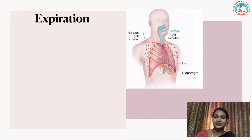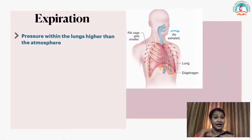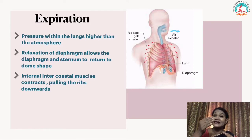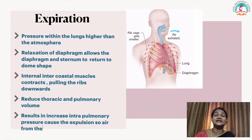The next phase is expiration — breathing out. The pressure within the lungs is higher than the atmosphere. The relaxation of the diaphragm allows it to return to its dome shape. The internal intercostal muscles contract and pull the ribs downward, reducing the thoracic volume and pulmonary volume. This increases the intra-pulmonary pressure, causing the air to be expelled out of the lungs.